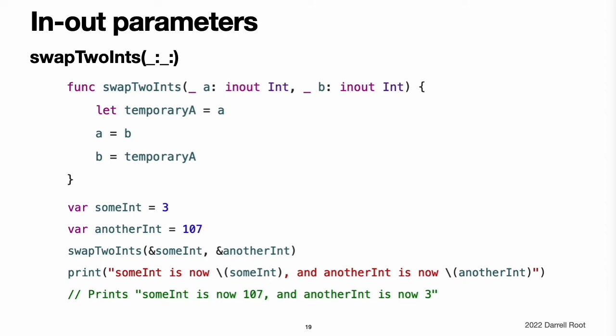In-out parameters. Function parameters are constants by default. Trying to change the value of a function parameter from within the body of that function results in a compile-time error — this means you cannot change the value of a parameter by mistake. If you want a function to modify a parameter's value and want those changes to persist after the function call has ended, define that parameter as an in-out parameter instead. You write an in-out parameter by placing the inout keyword right before a parameter's type. An in-out parameter has a value that's passed into the function, is modified by the function, and is passed out of the function to replace the original value. You can only pass a variable as the argument for an in-out parameter — you cannot pass a constant or a literal value. You place an ampersand directly before a variable's name when you pass it as an argument to an in-out parameter to indicate that it can be modified by the function.